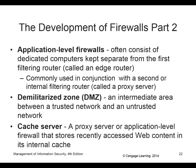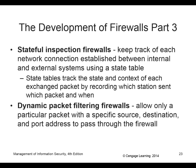Stateful inspection keeps track of each network connection between an internal and external system using a state table. So if I go to Google and ask for information, the request from Google can come back — but it's not going to let a request come in that didn't initiate on the inside. It tracks the context of each exchange of packets. Dynamic packet filtering allows only a particular packet with a specific source, destination, and port address — it can be updated to look for stuff from a certain location.